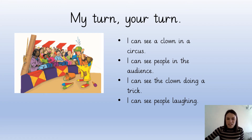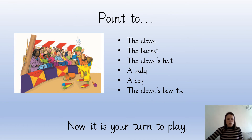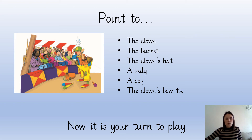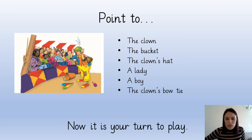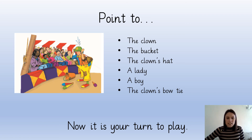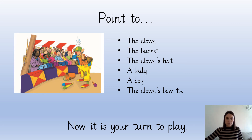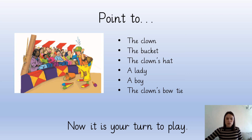Well done for saying those full sentences! Now look very carefully at the picture and I'm going to ask you to point to some things that you can see. Point to the clown. Point to the bucket. Point to the clown's hat. Point to a lady. Point to a boy. And point to the clown's bow tie. Well done if you were able to find all of those things in the picture.